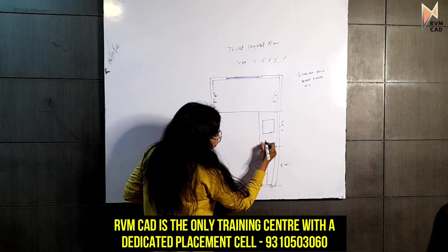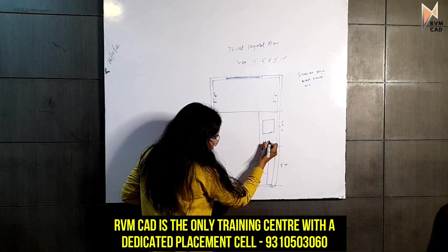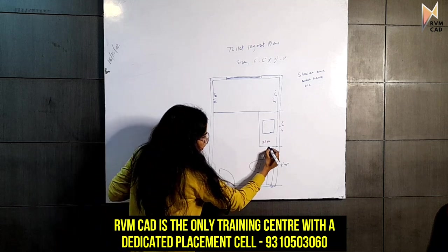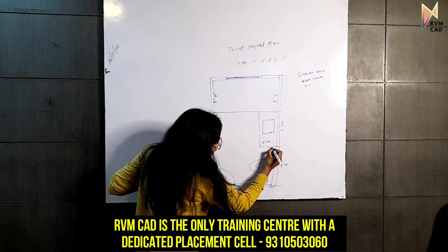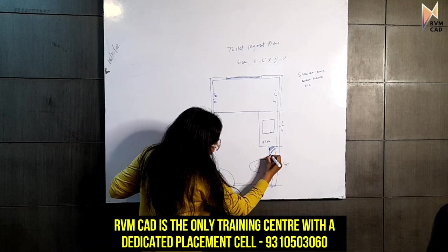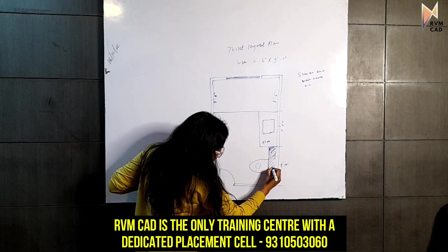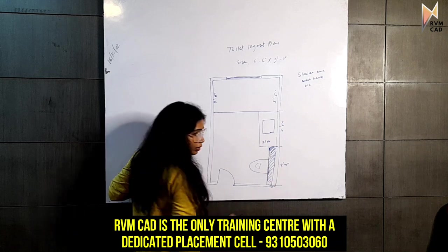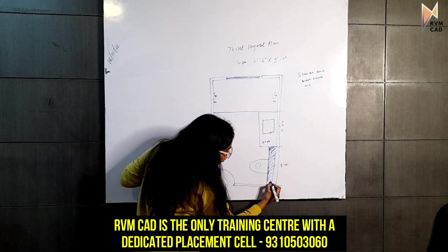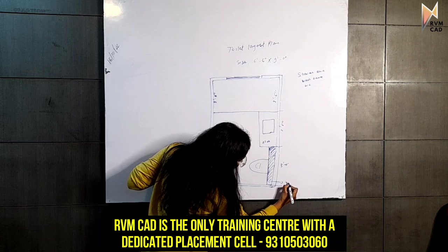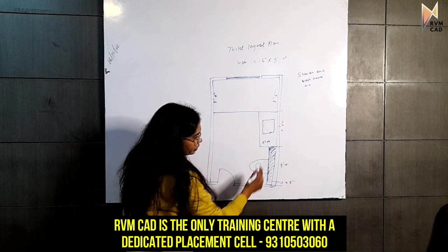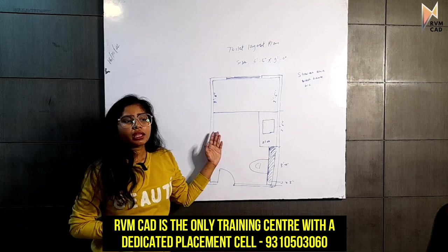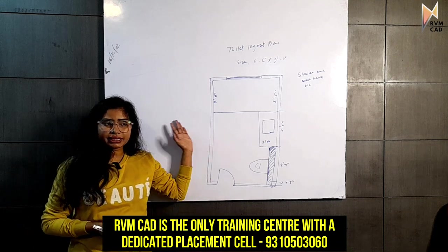The width is 2 feet. I have told you this is our dummy wall, and on top of this dummy wall, the WC is a wall-mounted WC. The width of this dummy wall is 4.5 inches.